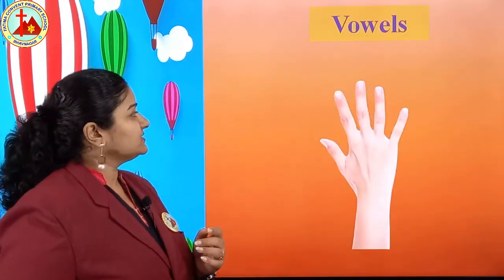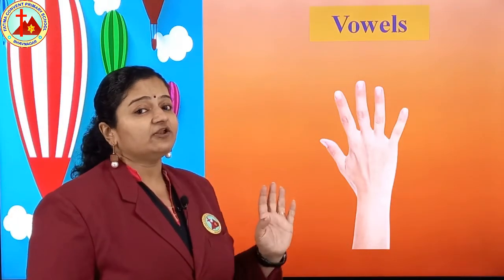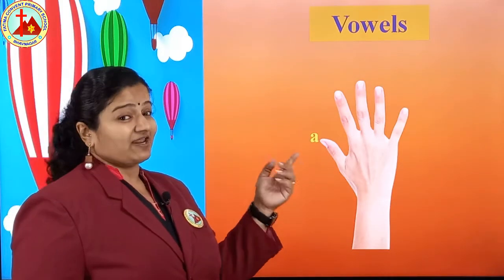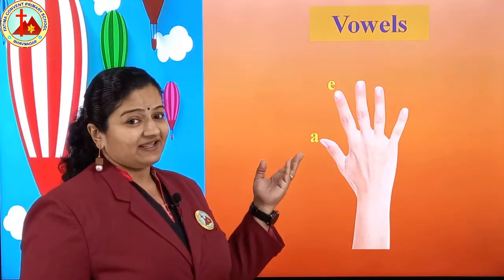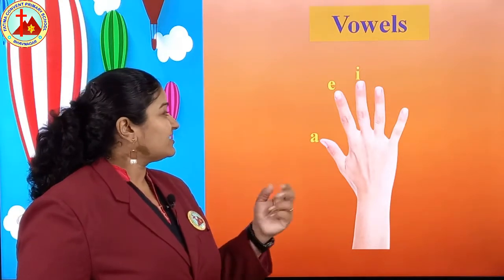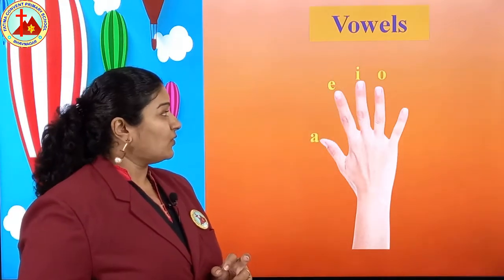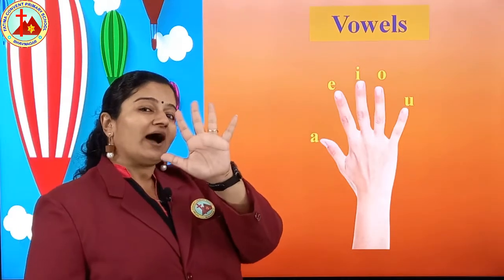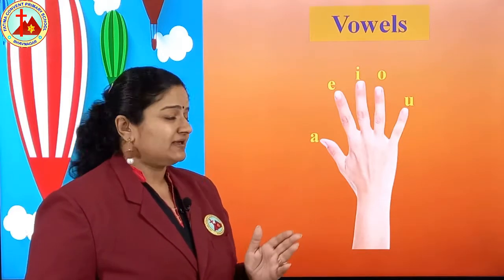Come on, tell me — which are the vowels? Now miss will not tell you, you tell me. Come on. A — very good. After A, E. After E, I. After I, O. And U. A, E, I, O, U are five vowels in the alphabet.